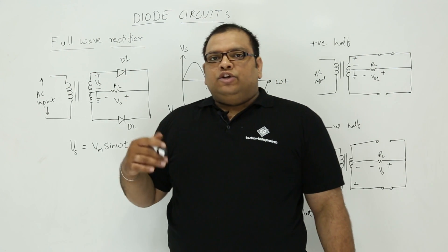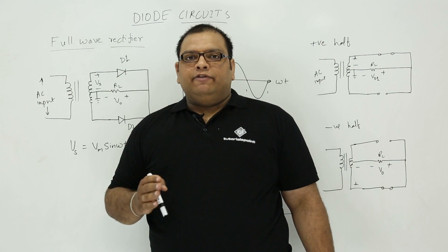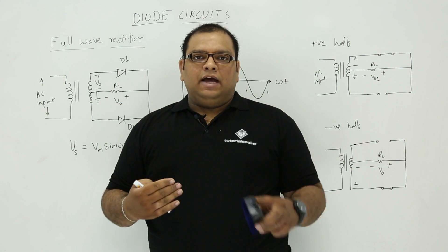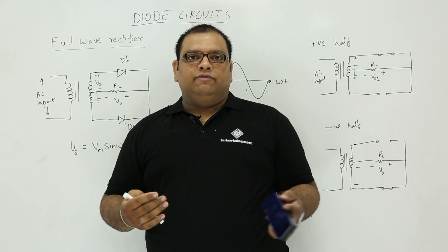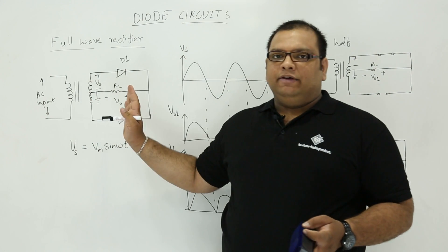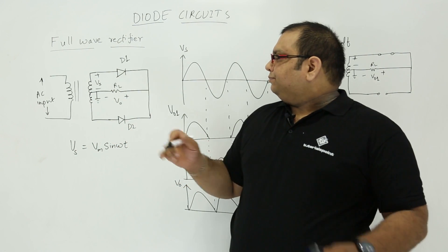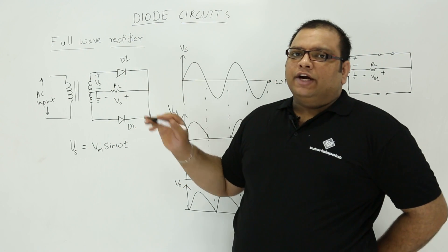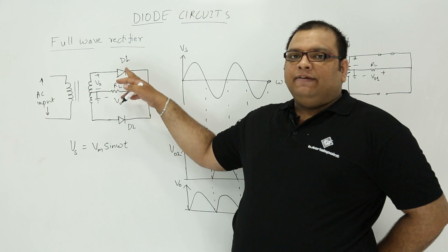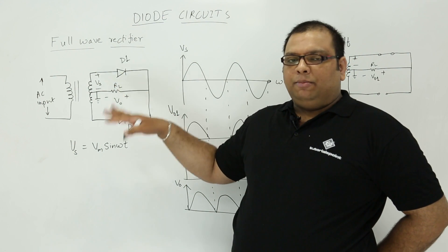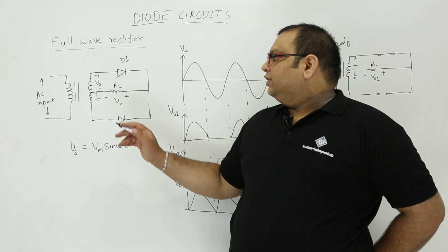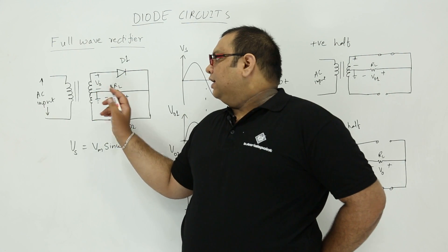When you are using a half wave rectifier, only the positive half is used and the negative half is clipped. So only half of the waveform is being utilized. Here in the full wave rectifier, we will try to rectify the complete waveform — both the positive half as well as the negative half. For that we use two diodes and a center tap transformer.